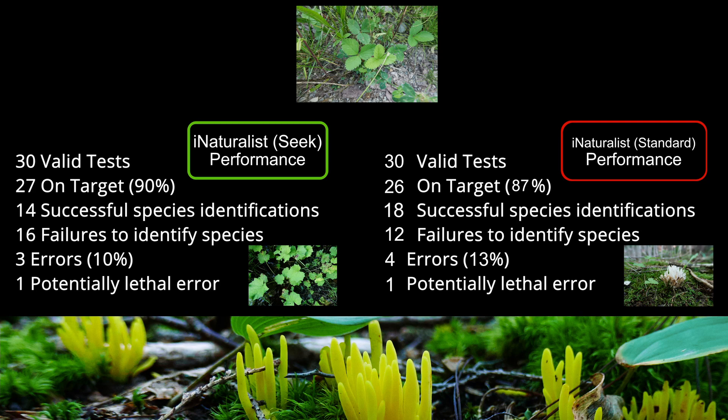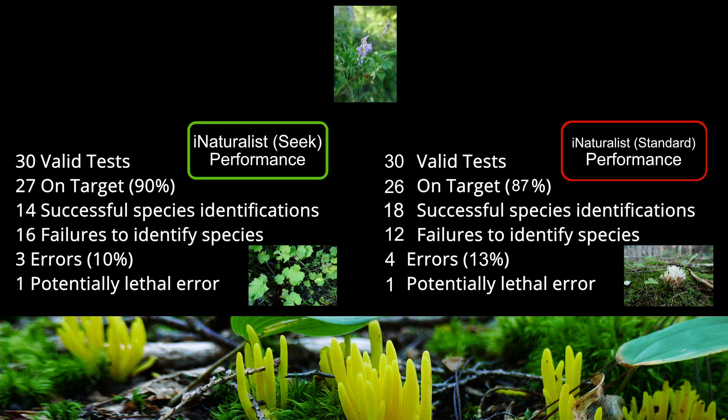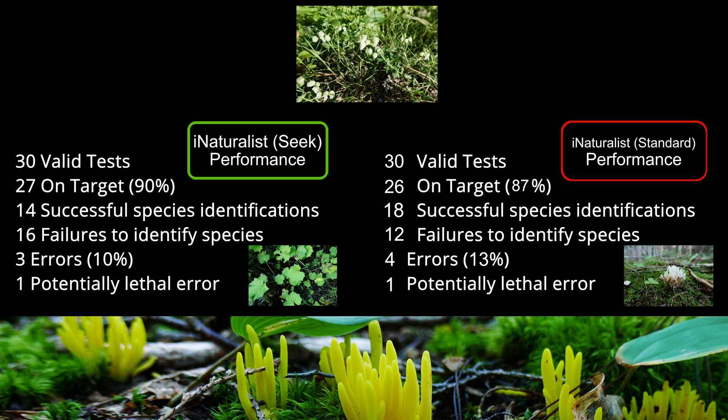For naturalists, such errors are no big deal, and may indeed present learning opportunities, as long as they remember not to rely on identification apps and go back and double-check those identifications later. For foragers, on the other hand — would you want to eat your finds if you knew that roughly one in ten things that you found possessed some degree of toxicity and was potentially even lethal?